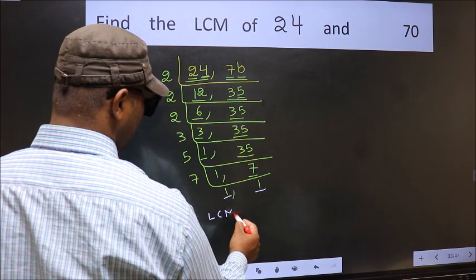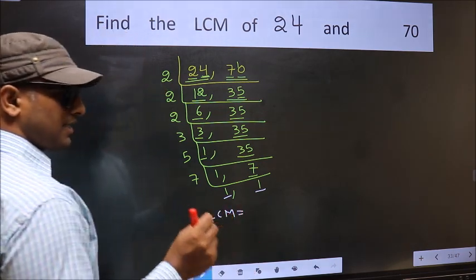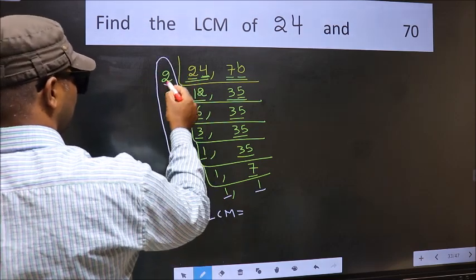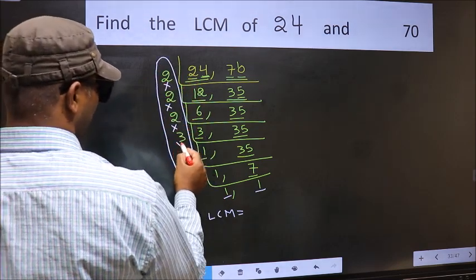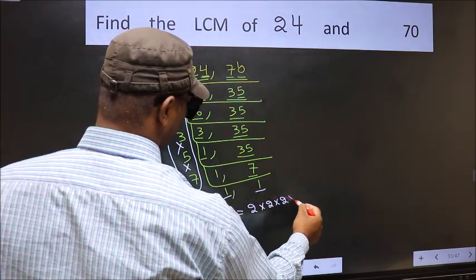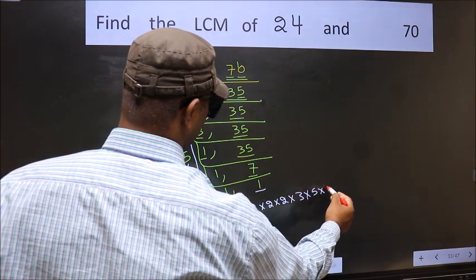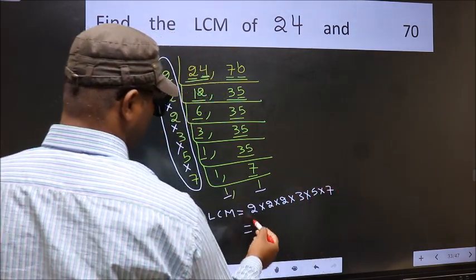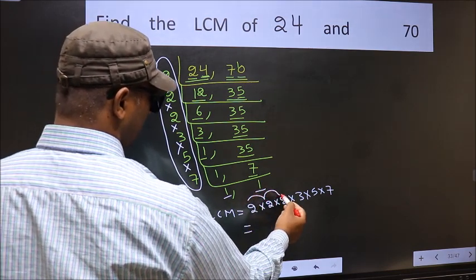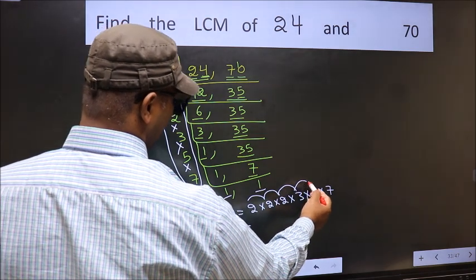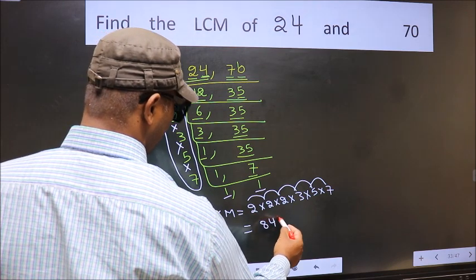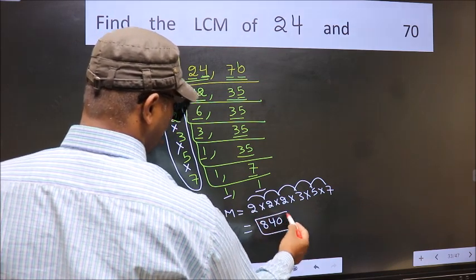So our LCM is the product of these numbers: 2×2×2×2×3×5×7. Let us multiply these numbers: 2×2=4, 4×2=8, 8×3=24, 24×5=120, 120×7=840. So 840 is our LCM.